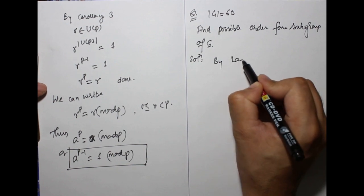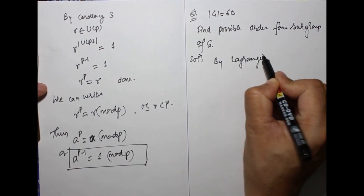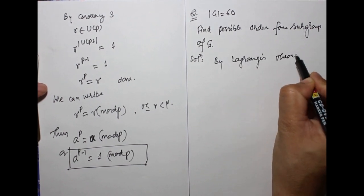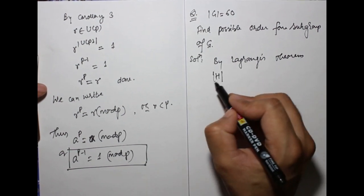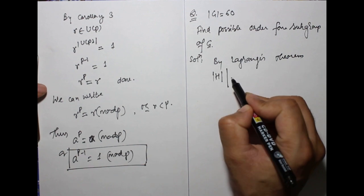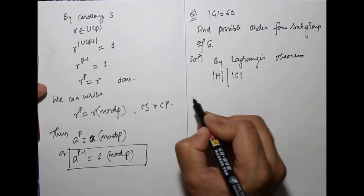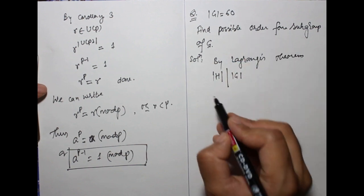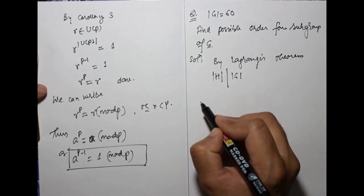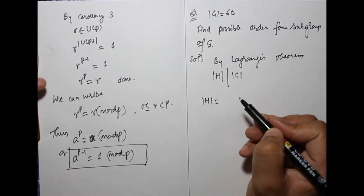By Lagrange theorem, order of subgroup divides order of group. We have to find divisors of 60. That is, possible order of s equals to: